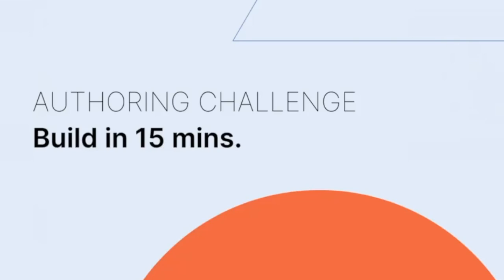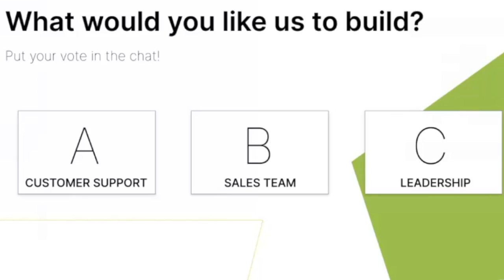To begin that process, we want to ask you to help us decide what we're going to build. So in the chat, decide what role we're going to build out here: A for customer support role, B for sales, and C for leadership. Looking at the chat, I've seen an overwhelming response for C, leadership.